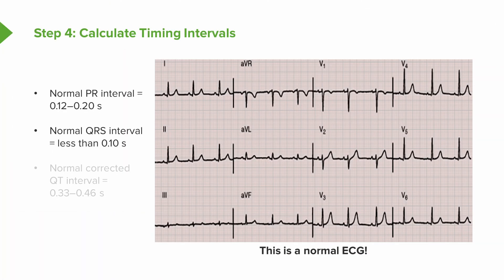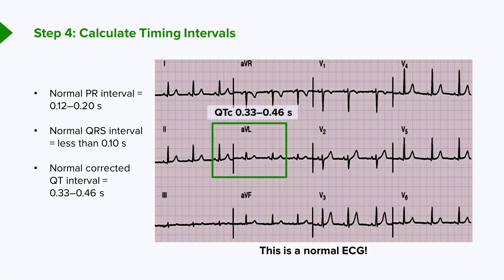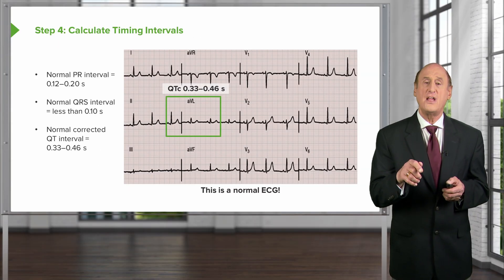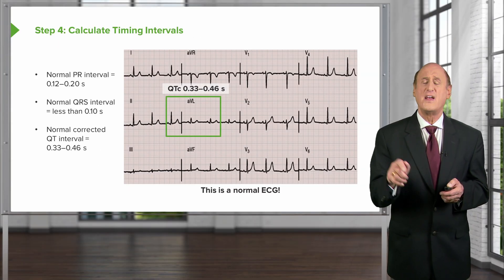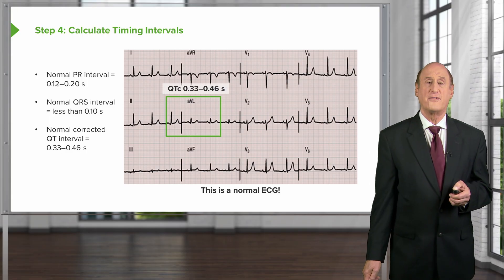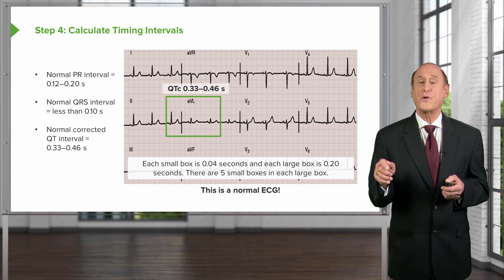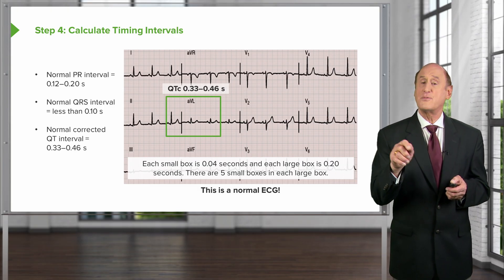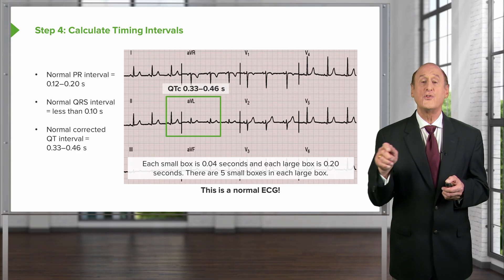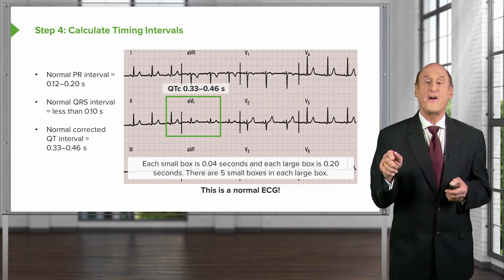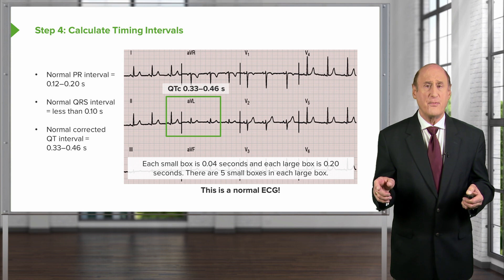The normal QRS interval is less than 0.1 seconds — that's two and a half little boxes. The normal QT, corrected for heart rate by formula, is somewhere between 0.33 and 0.46 seconds — remember, that's from the beginning of the Q wave to the end of the T wave. Each small box is 0.04 seconds, so a large box is five times 0.04, or 0.20 seconds, and there are five small boxes in each large box.